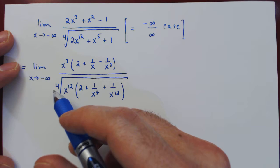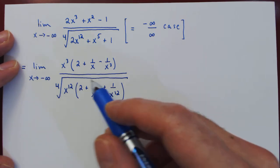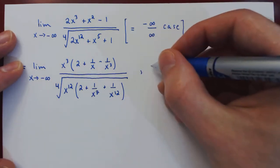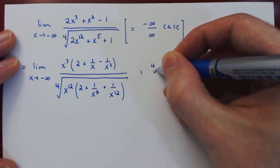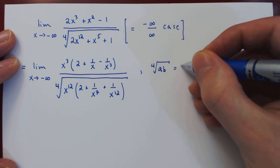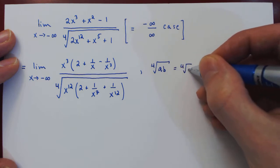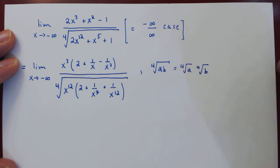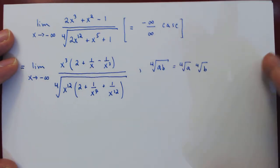And then we have the fourth root of a product of two terms. And in general, the fourth root of, say, a times b can be broken up as the fourth root of a times the fourth root of b. So we can split those two up.